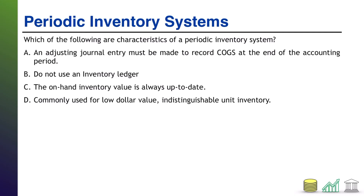All right, welcome back. A: an adjusting journal entry must be made to record cost of goods sold at the end of the accounting period. This is a characteristic of a periodic inventory system. You are not reducing inventory for every sale made. Instead, you're comparing your ending on-hand balance with your starting on-hand balance, and then you make an adjustment for the difference to cost of goods sold.